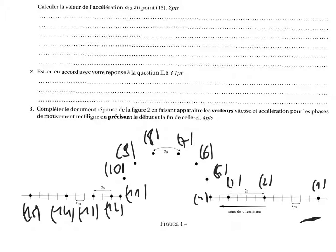On nous demande de déterminer le type de mouvement pour différentes phases. On s'aperçoit qu'on a différentes trajectoires : une trajectoire rectiligne, une trajectoire circulaire, et enfin une autre trajectoire rectiligne. Donc nous avons ici trois mouvements différents. On va pouvoir les séparer comme ceci et comme ceci.